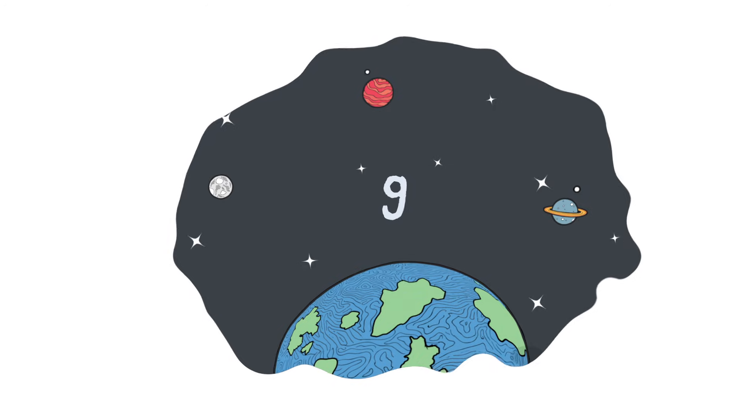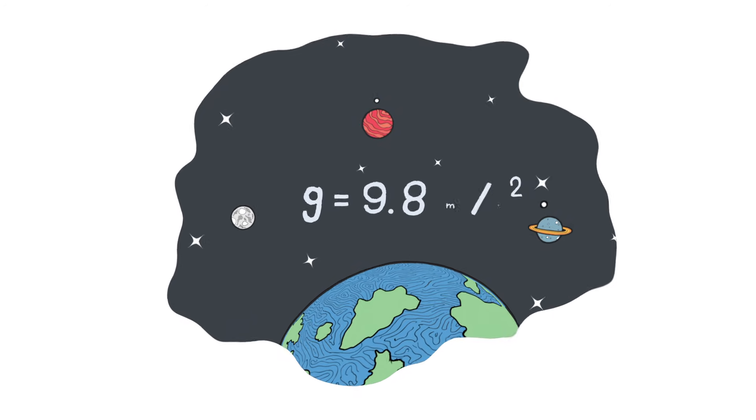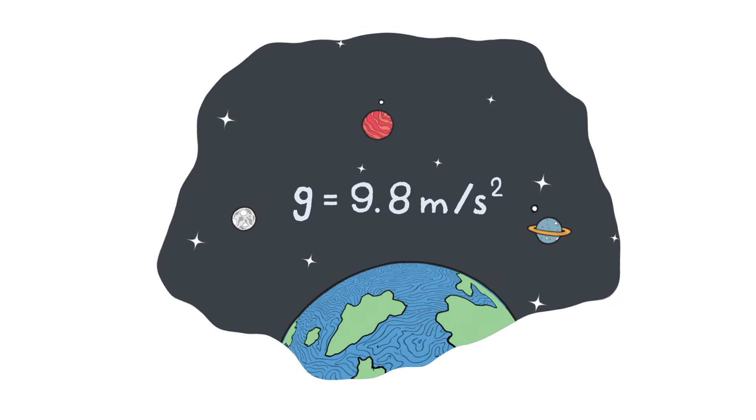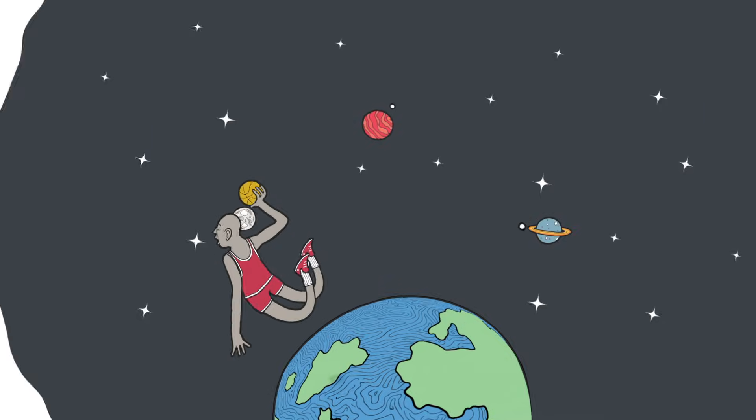And of course, gravity is what's making it so hard to stay in the air longer. Earth's gravity pulls all nearby objects towards the planet's surface, accelerating them at 9.8 meters per second squared. As soon as you jump, gravity is already pulling you back down.